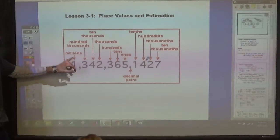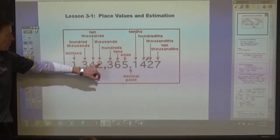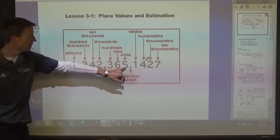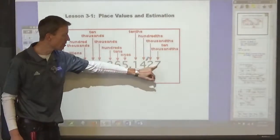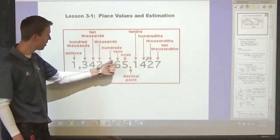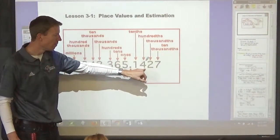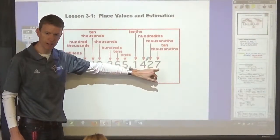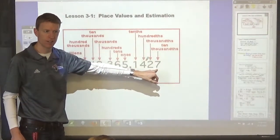So, 1,342,365, and that's just the ones place, but then the numbers to the right of the decimal, you read them just like you read the numbers to the left of the decimal place, 1,427, and then say the place of the last digit.